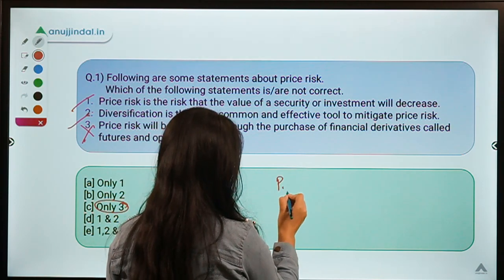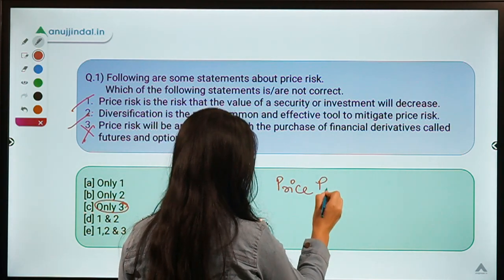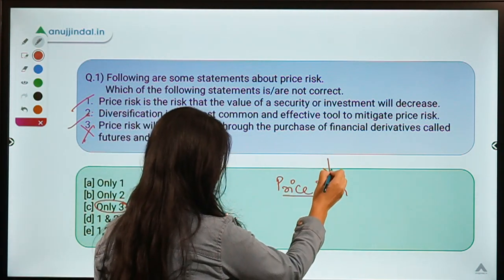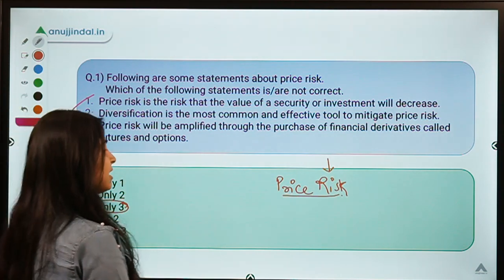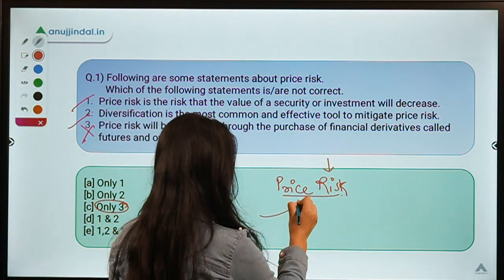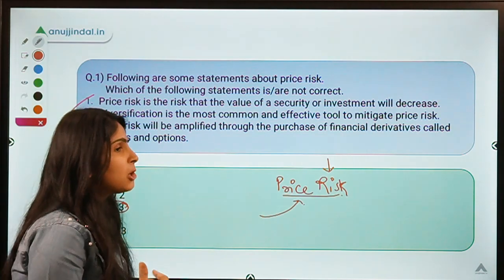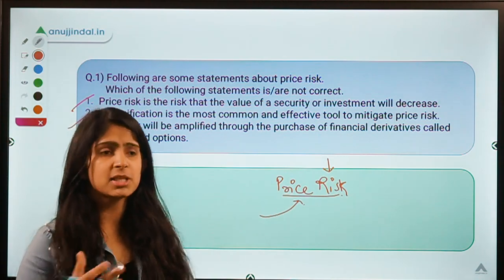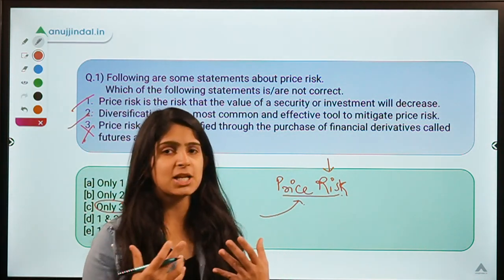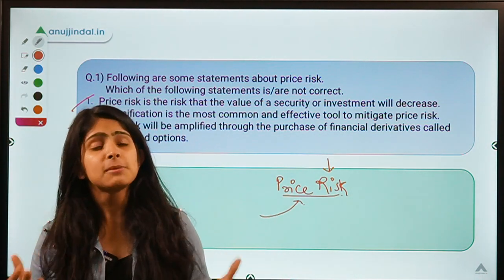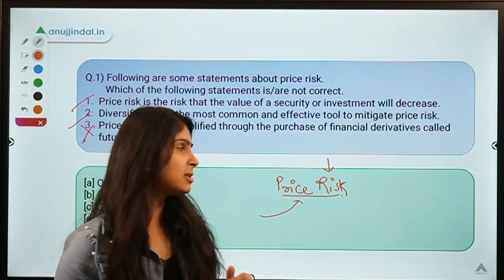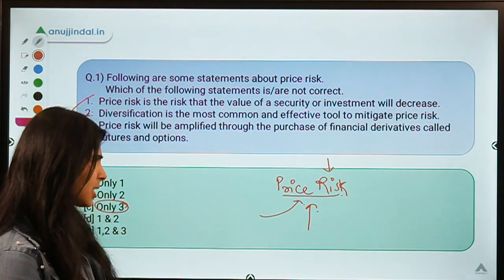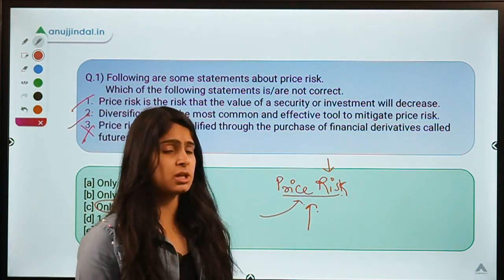Let us understand what price risk means. Risk signifies some kind of loss, and price risk means a possibility of a loss due to a change in prices of goods or services. In financial markets, it refers to a possibility of loss in case the price of your investment changes. That is price risk — a very simple concept.